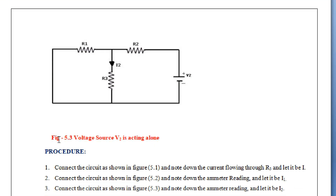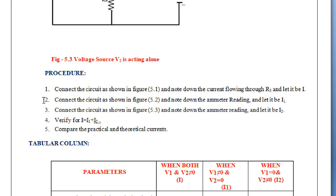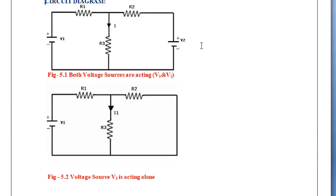To verify the superposition theorem, we need to follow a procedure which includes five steps. The first step is: connect the circuit as shown in figure 5.1 and note down the current flowing through R3, let it be capital I. In the second step, connect the circuit as shown in figure 2 and note down the ammeter reading, let it be I1. We are connecting the circuit and measuring the current flowing through R3, that is I.